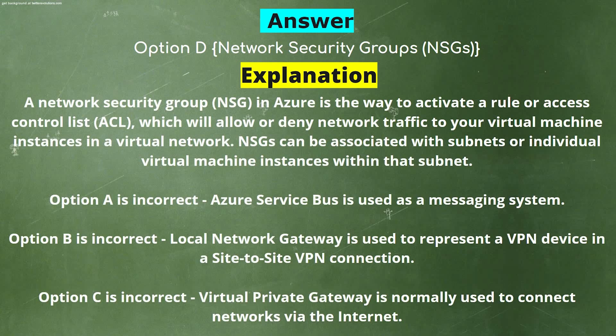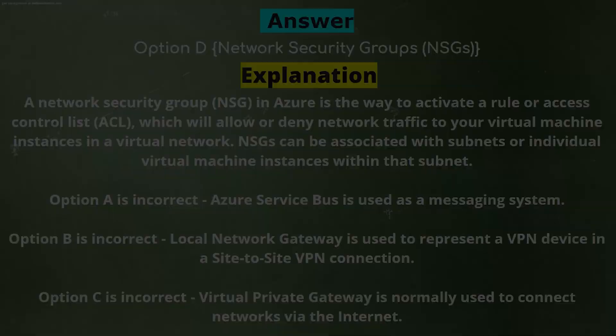Explanation. A network security group in Azure is the way to activate a rule or access control list (ACL) which will allow or deny network traffic to your virtual machine instances in a virtual network. NSGs can be associated with subnets or individual virtual machine instances within that subnet. Option A is incorrect — Azure Service Bus is used as a messaging system. Option B is incorrect — Local Network Gateway is used to represent a VPN device in a site-to-site VPN connection. Option C is incorrect — Virtual Private Gateway is normally used to connect networks via the internet.